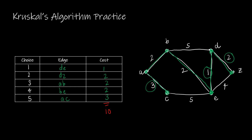Creating that minimum spanning tree, I would start with A. A branches off into both B and C. B branches off down into E, E to D, and D to Z. Adding those weights: A to B is two, A to C is three, B to E is two, E to D is one, and D to Z is two. I've got a total weight of ten. And you'll notice it's the same tree that we created using Prim's algorithm.